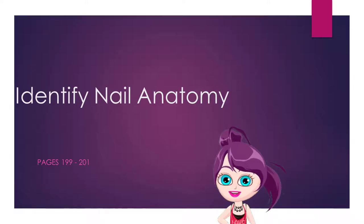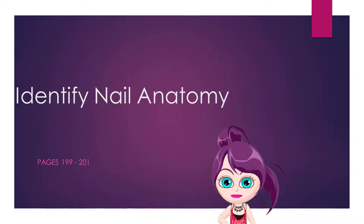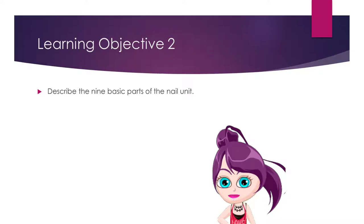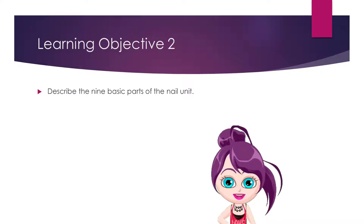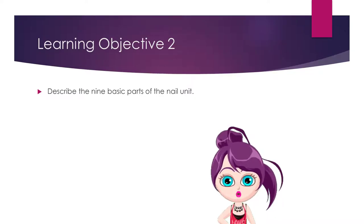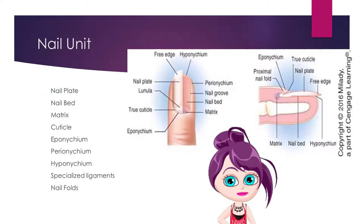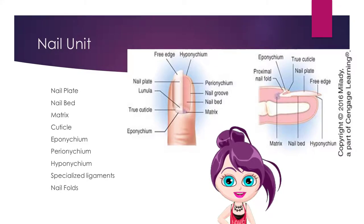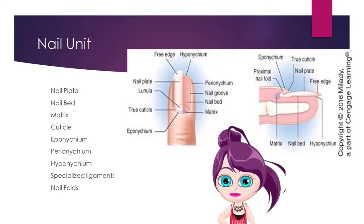Now let's take the time to identify the nail anatomy. Our learning objective today is to describe the nine basic parts of the nail unit. The basic nail unit is composed of nine parts.